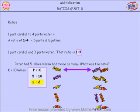So let's answer the question, what was the ratio? The ratio was one to two. And the big hint there was that Karen had twice as many. So for every one of Peter's lollies, Karen had two. So if he had five, Karen had ten. So that was a big hint.